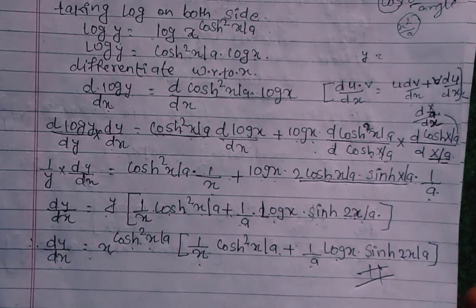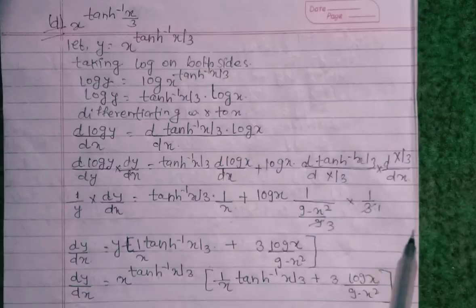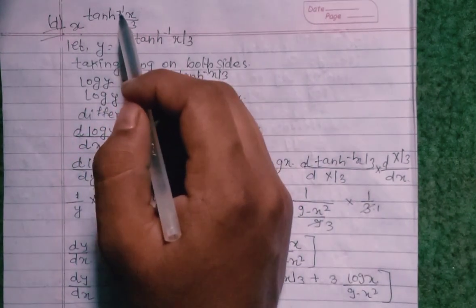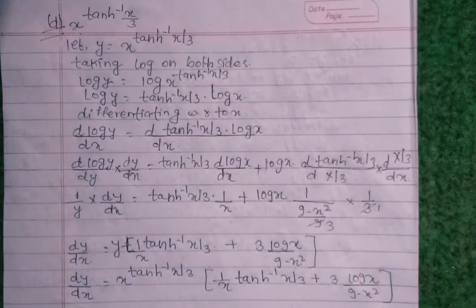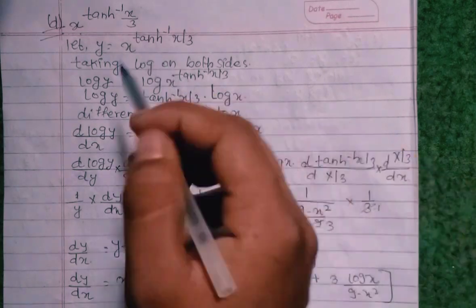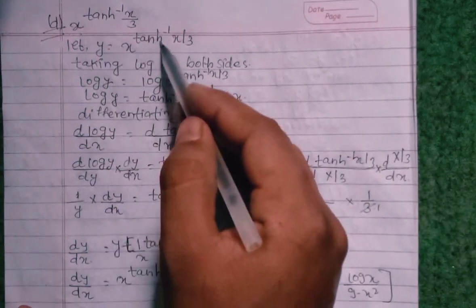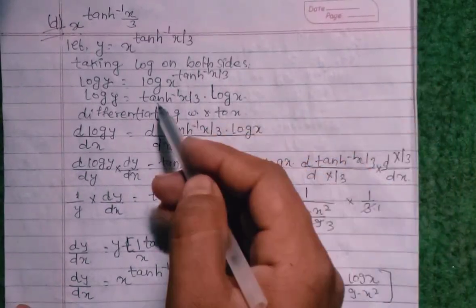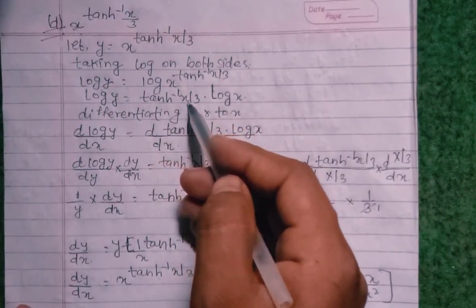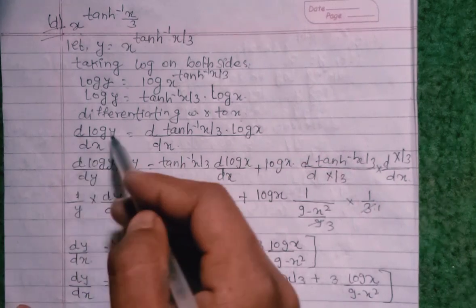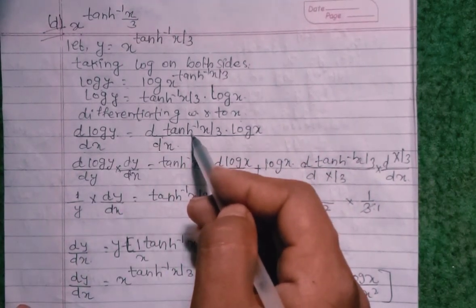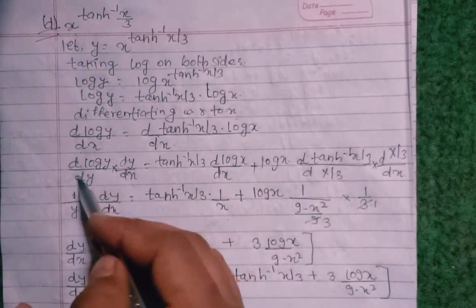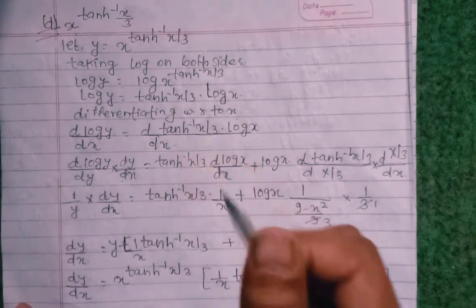The D number question: y equals x^(tan⁻¹(x/a)). Now I will use the inverse formula, an easy process. y equals x^(tan inverse x/3). Taking log on both sides: log y equals log x^(tan⁻¹(x/a)), which gives log y equals tan⁻¹(x/a) times log x. Differentiating with respect to x: d(log y)/dx equals d/dx of [tan⁻¹(x/3) into log x]. So d(log y)/dy times dy/dx equals tan⁻¹(x/3) into d(log x)/dx.